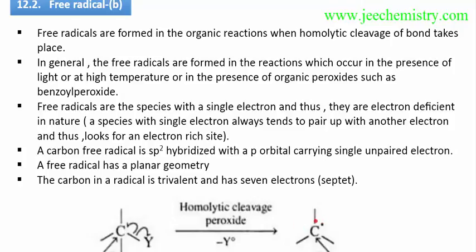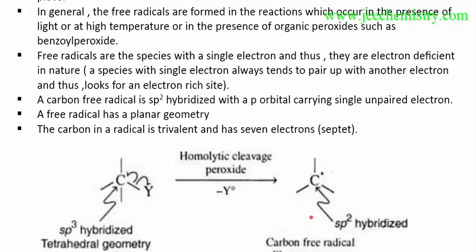A free radical has a strong tendency to form a bond and complete its octet. With seven electrons it is incomplete, so it will try to attack an electron and gain one more to reach a full octet of eight electrons and become stable. This electron deficiency makes it unstable, so it will try to gain one electron to achieve stability.